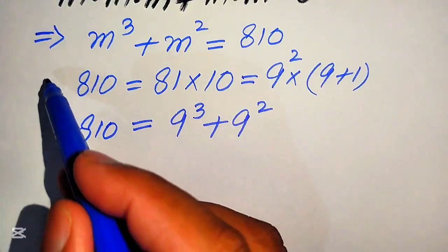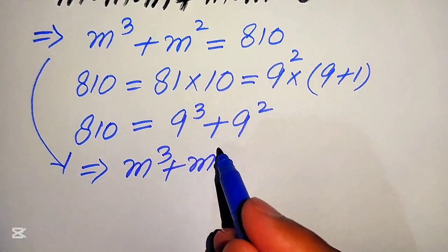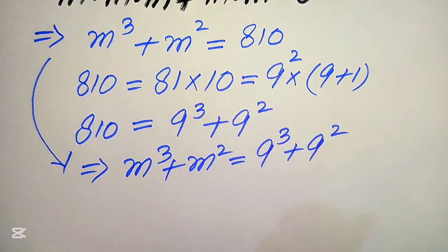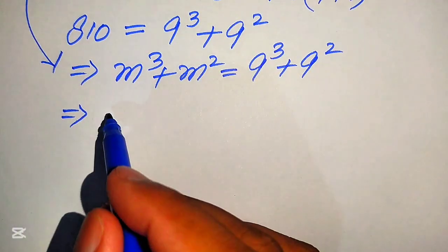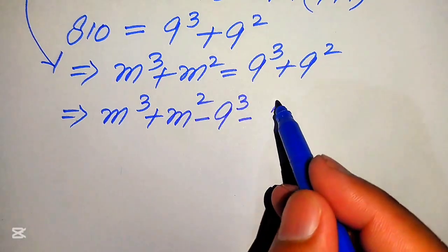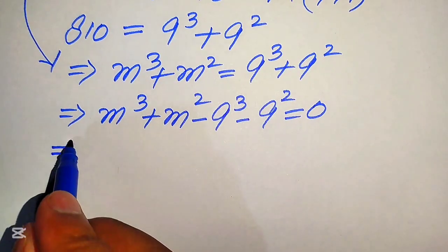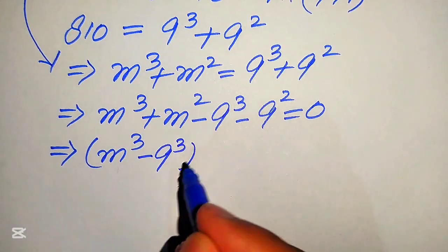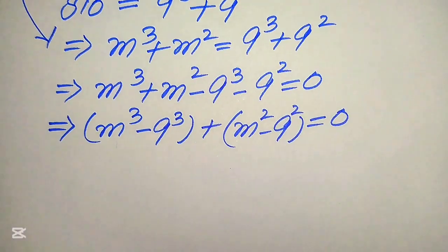Now we replace this value, so the equation becomes m cubed plus m squared equals 9 cubed plus 9 squared. We move the right-hand side values to the left-hand side, giving us m cubed plus m squared minus 9 cubed minus 9 squared equals 0. We then pair the cubic terms together and the square terms together: m cubed minus 9 cubed, plus m squared minus 9 squared, equals 0.